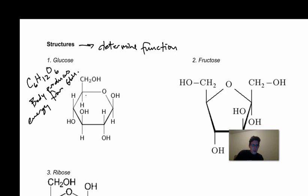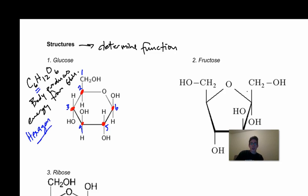At each red dot there's a carbon, even though it's not shown — it's called an implied carbon. We're using this because it's an organic notation, so these are all carbon rings. This is a six-carbon ring: carbon number one, two, three, four, five, and six. Oxygens and hydrogens fill in the empty spaces, with one of the oxygens being part of the ring. This is a hexagon structure, and that will determine its function.